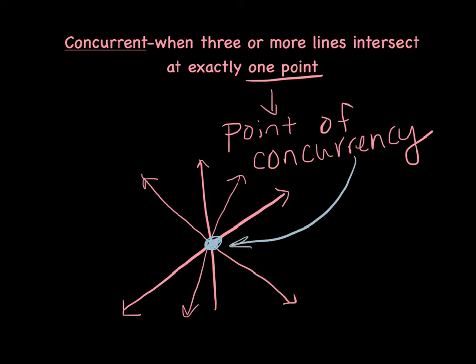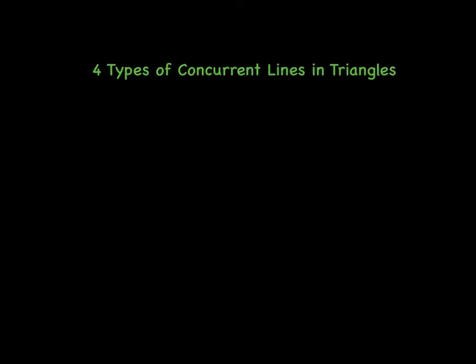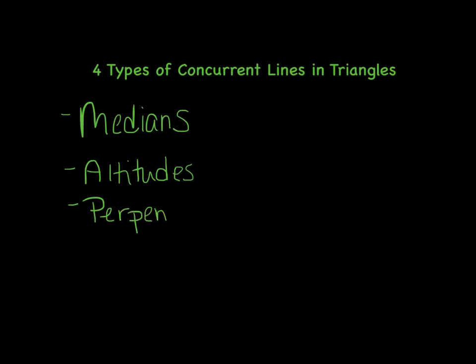But we've been talking about triangles, so we're going to talk specifically about triangles. There are four types of concurrent lines in triangles that we're going to be talking about: medians, altitudes, perpendicular bisectors, and angle bisectors.